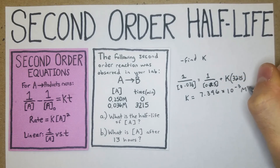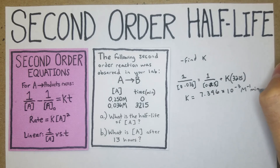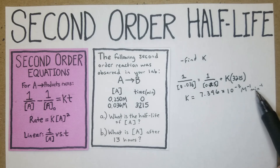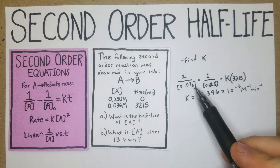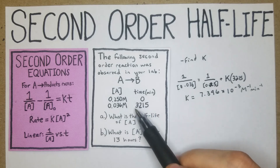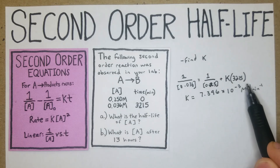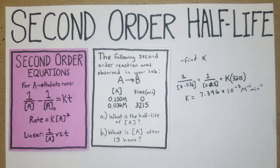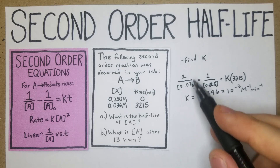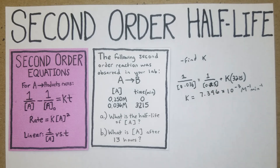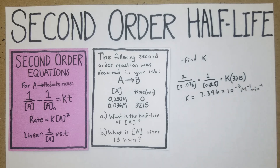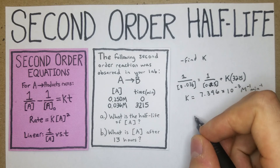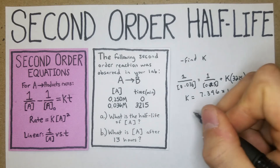The units for K are going to be M⁻¹ min⁻¹. If you're not sure how we got those units, we can work it back — we had both concentrations in M and time in minutes, and it works out that way when we divide through: 1/0.036 minus 1/0.25 divided by 3215.